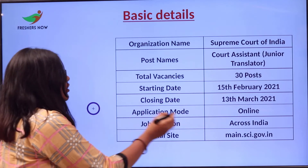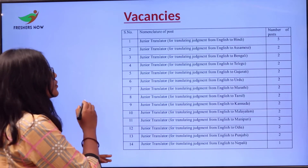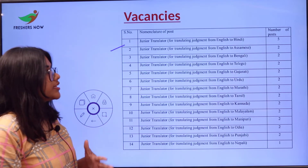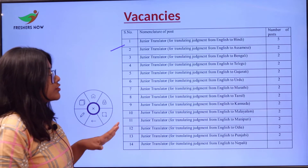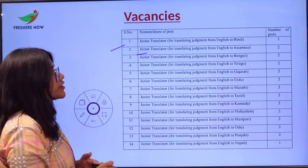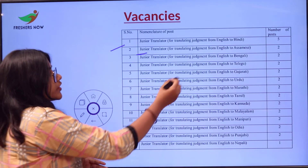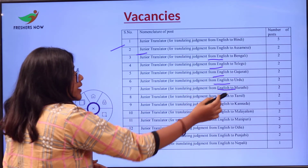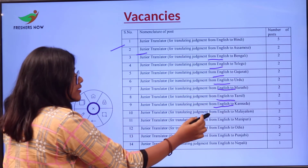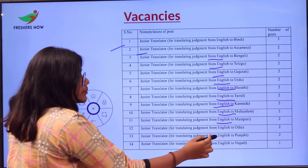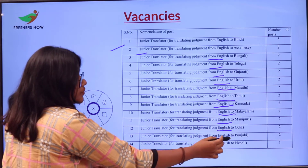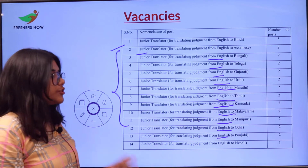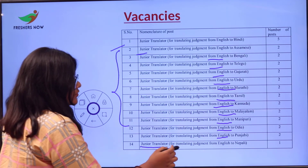Moving on to the vacancy details: for the post of Junior Translator for translating judgments from English to Hindi, there are five vacancies. For all the other Junior Translator posts — English to Assamese, English to Bengali, English to Telugu, English to Gujarati, English to Urdu, English to Marathi, English to Tamil, English to Kannada, English to Malayalam, English to Manipuri, English to Oriya, and English to Punjabi — each of these posts has two vacancies.